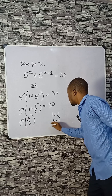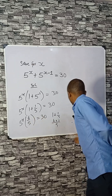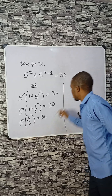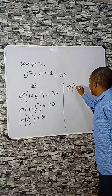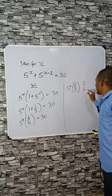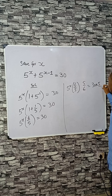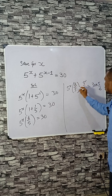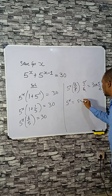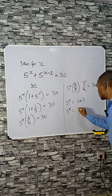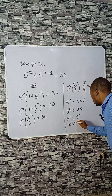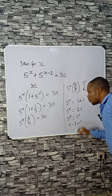So 5^x times 6 over 5 equals 13. Now we multiply both sides by 5 over 6, so that cancels out. We get 5^x equals 13 times 5 over 6 — that's 65 over 6... 30 divided by 6 is 5, so 5 times 5 is 25. So 5^x equals 25, which is 5 squared, therefore x equals 2. Very simple!